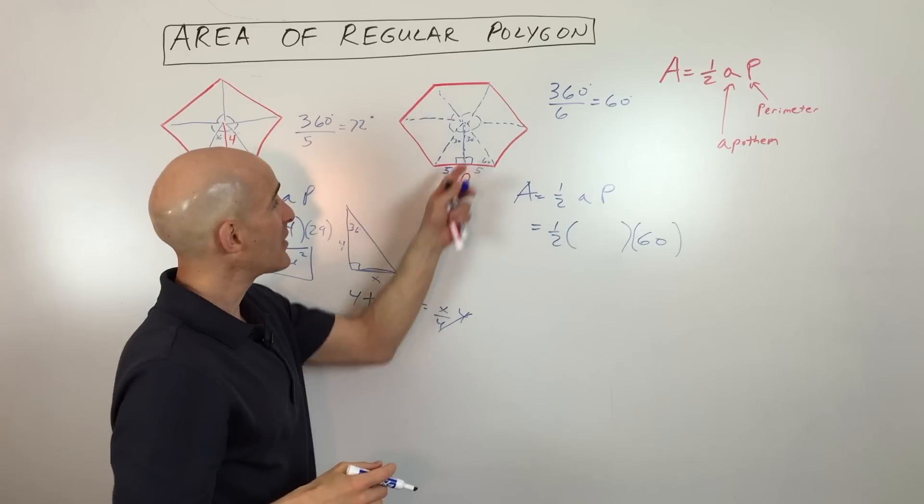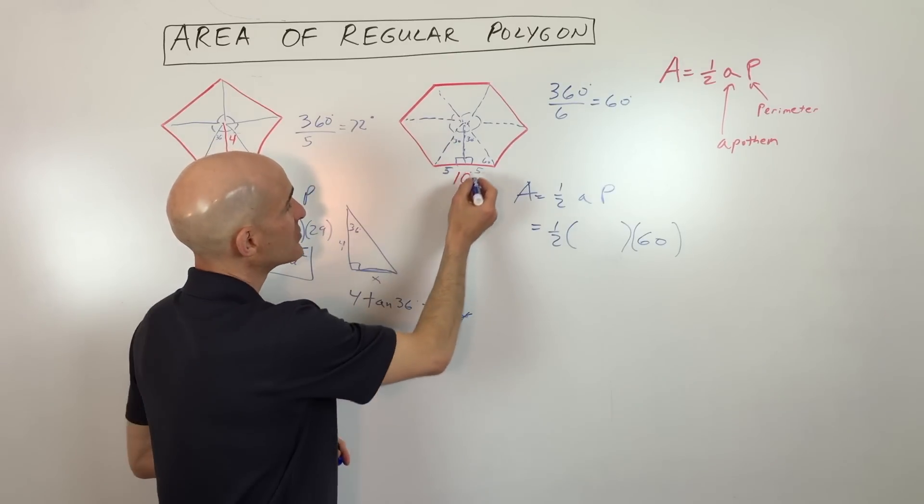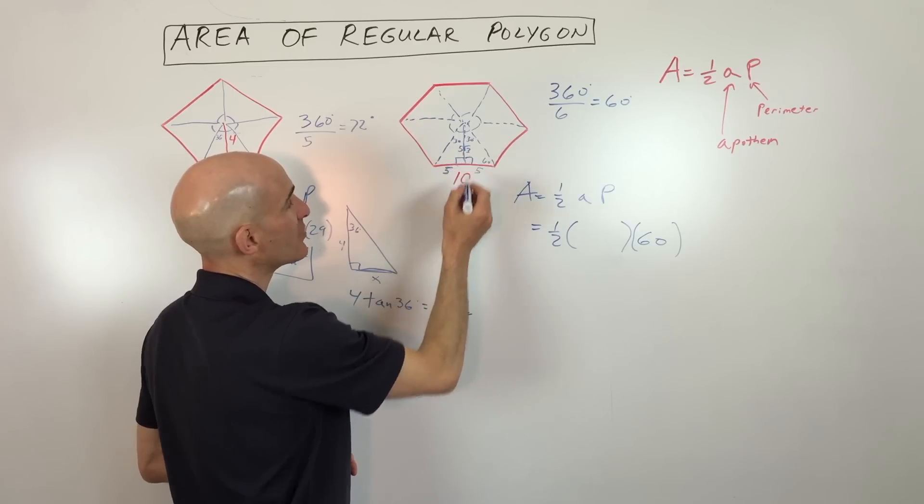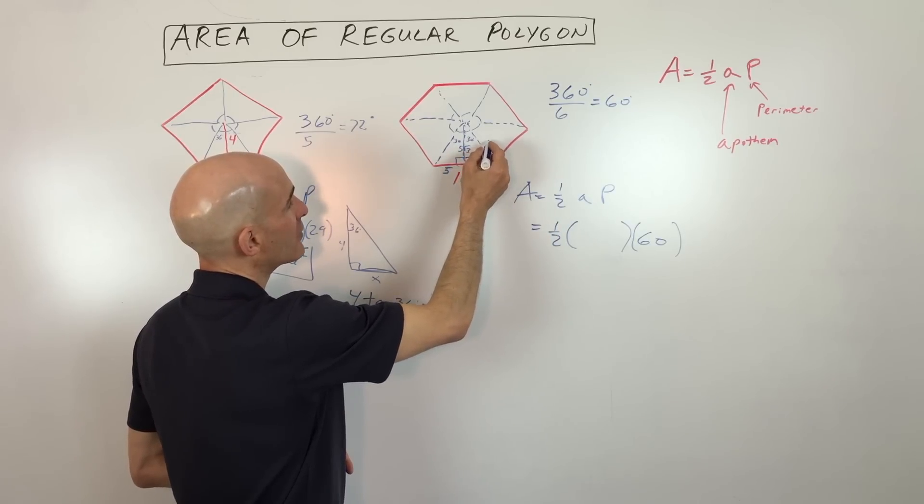And we can use our special right triangles because it's a 30, 60, 90 triangle. So this is going to be 5. This side here, the apothem is going to be 5 square root of 3. And then over here, this would be 10, right?